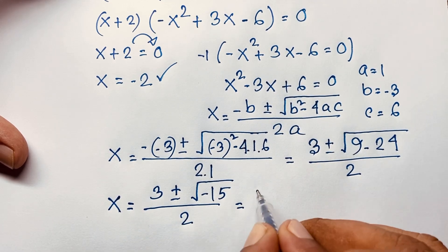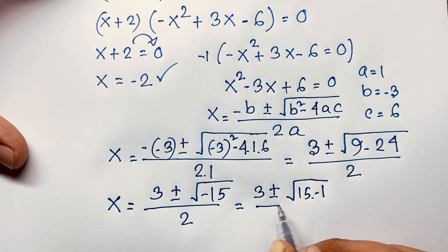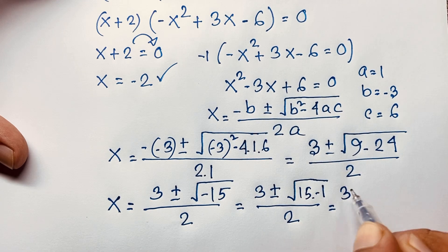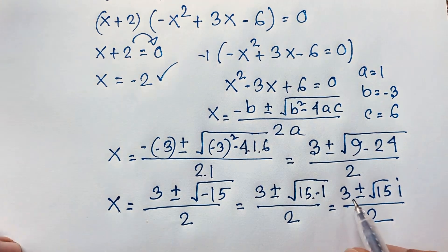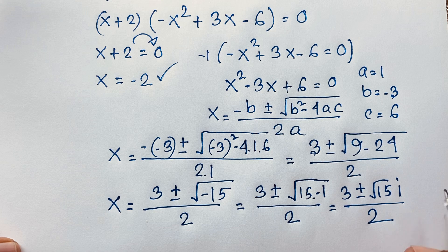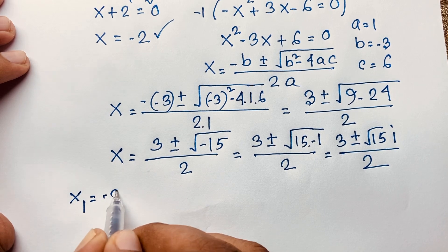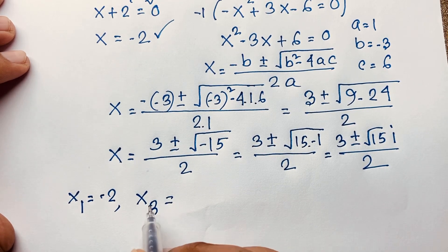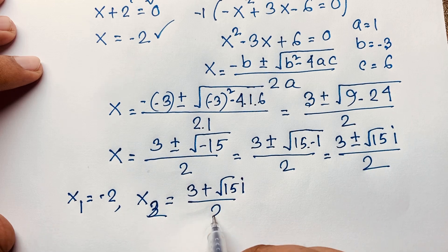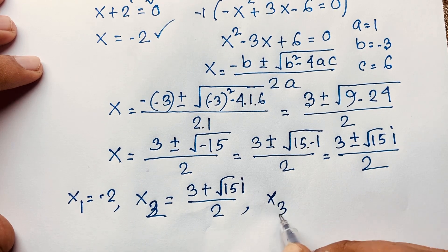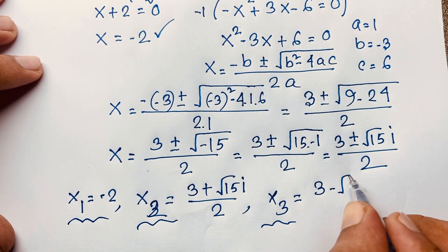So x equals 3 plus or minus square root of negative 15 over 2. We can write this as 3 plus or minus square root of 15 times square root of negative 1, over 2. Since square root of negative 1 equals i, this gives x equals 3 plus or minus square root of 15 times i, over 2 — a complex number. So x2 equals 3 plus square root of 15 i over 2, and x3 equals 3 minus square root of 15 i over 2.